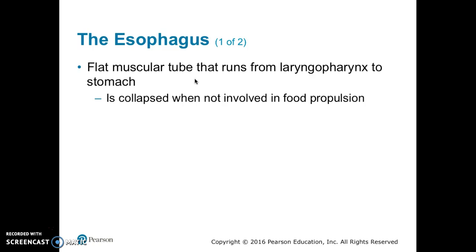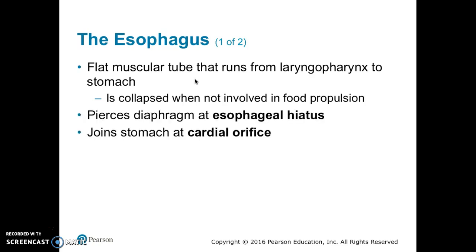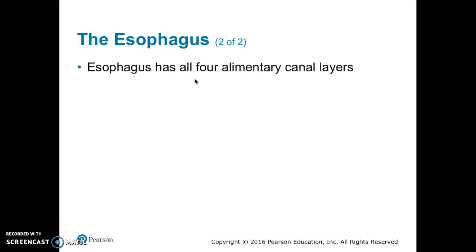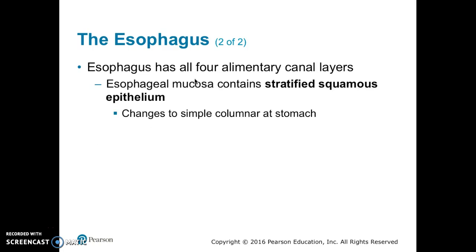The esophagus is a flat muscular tube that runs from the laryngopharynx to the stomach. It is collapsed when not involved in food propulsion. It pierces the diaphragm at the esophageal hiatus and joins the stomach at the cardiac orifice. The gastroesophageal or cardiac sphincter surrounds the cardiac orifice to keep it closed when food is not being swallowed. Mucus cells on both sides of the sphincter help protect the esophagus from acid reflux.